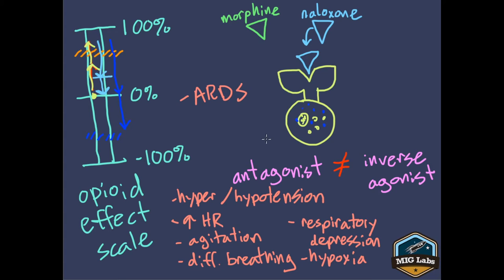If you've given too much naloxone too quickly and your patient starts going into ARDS, you'll notice increasing respiratory distress despite breathing for them, poor compliance when bagging — meaning you're having a hard time physically getting air in — and decreasing oxygen saturations. If you suspect ARDS, make sure you have really good airway management and breathe for that patient. Studies show opioid-related ARDS responds much better than typical ARDS, with significantly lower mortality.